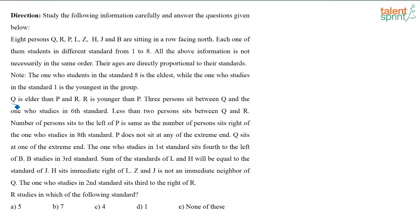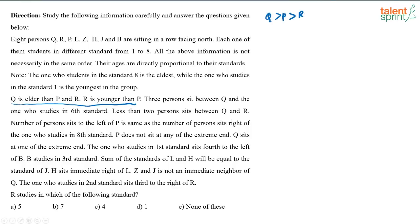Now, what is given here? Q is elder than P and R, and R is younger than P. So the order is: Q is elder than P, and P is elder than R. That is what is meant by these two statements.